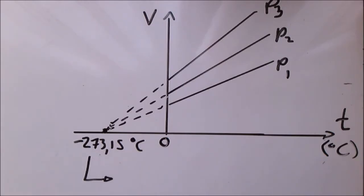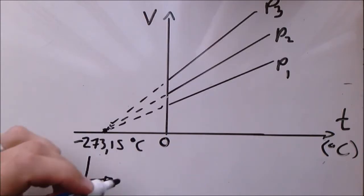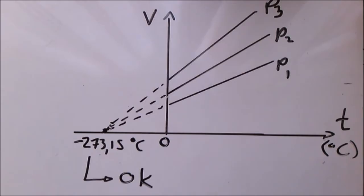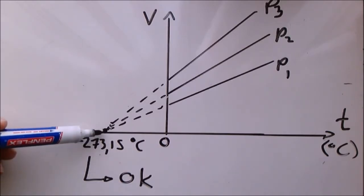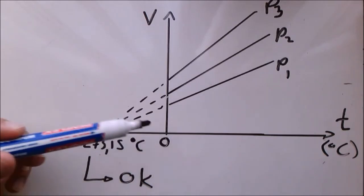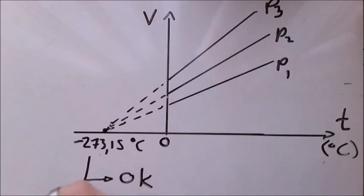This value is called absolute zero, and while it is clearly not zero on the Celsius scale, it is called absolute zero because it refers to zero Kelvin. This value was coined by Lord Kelvin, who identified it as the lowest possible temperature. From there he set up his Kelvin temperature scale starting at zero at that point, with zero degrees Celsius equal to 273.15 Kelvin, and a degree Celsius being the same magnitude as a degree Kelvin. The reference point is simply different.